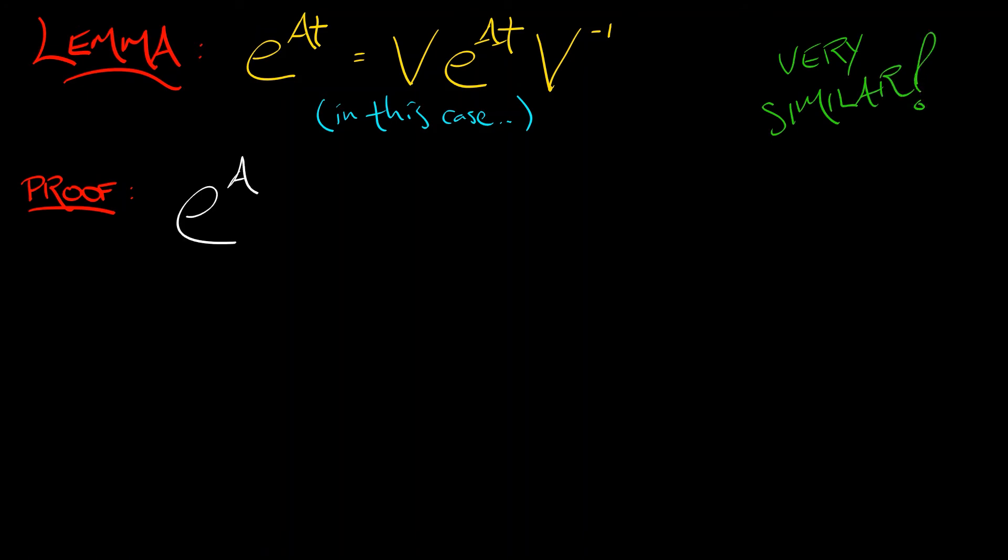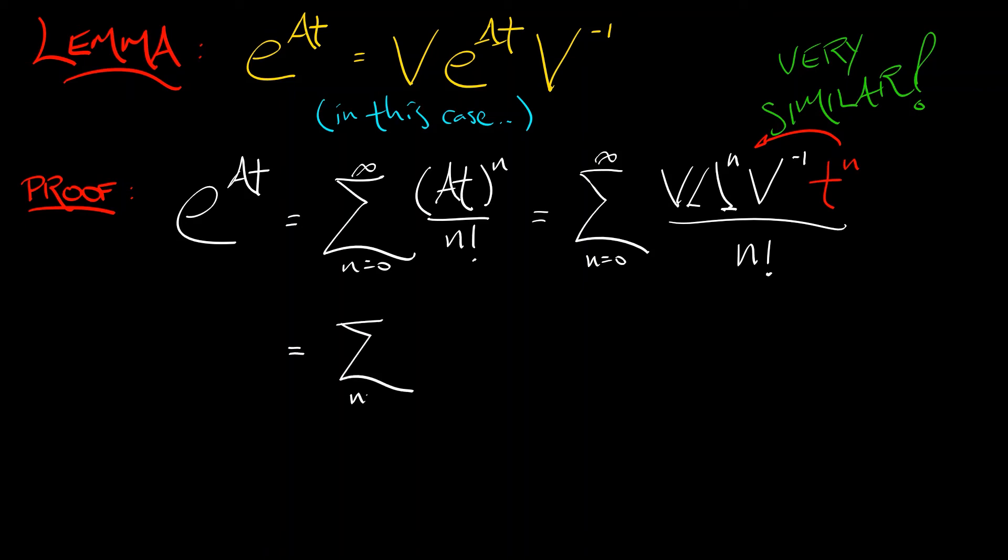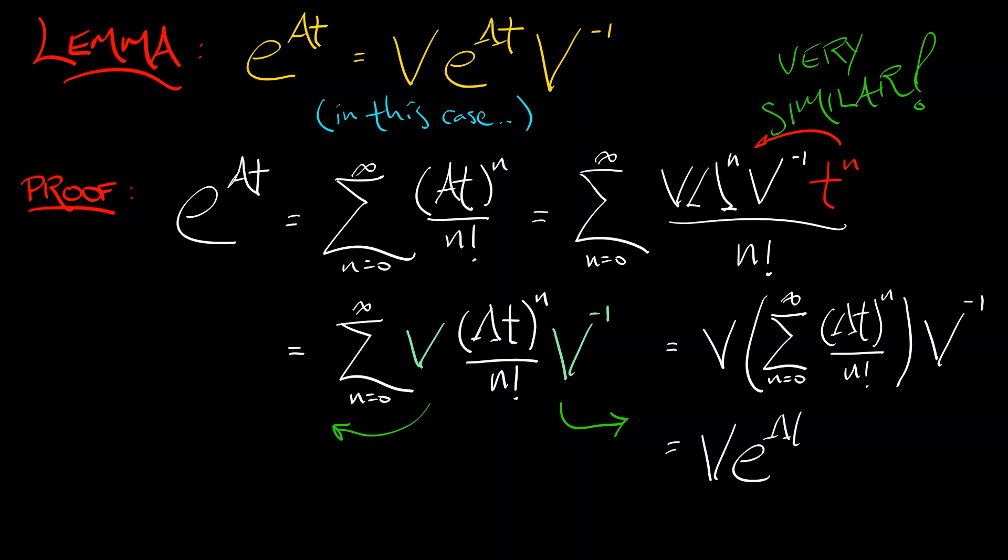By definition, e to the AT is the sum N goes from zero to infinity, quantity AT to the n divided by n factorial. Now, that A to the n I can write as V lambda to the n V inverse. I have that T to the n, but that's a scalar. I'm multiplying all the entries of the matrix by that. So I can move that around. I can move it to the right, move it back to the left. I can regroup things so that what we have is the sum n goes from zero to infinity of V on the left, then in the middle, lambda T to the n divided by n factorial, then on the right, V inverse. And because those Vs are constant, I can pull them out of the summation. And I can focus that summation just on the terms that have n dependence. So in the end, what I get is V times the sum, n goes from zero to infinity, lambda T to the n over n factorial, followed by post multiplied by V inverse. That is what we were trying to show.